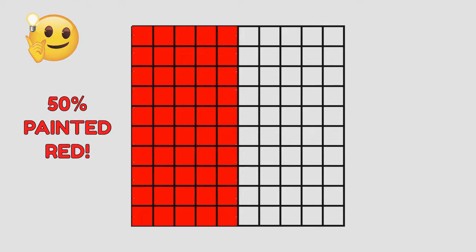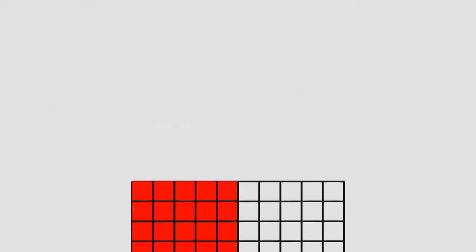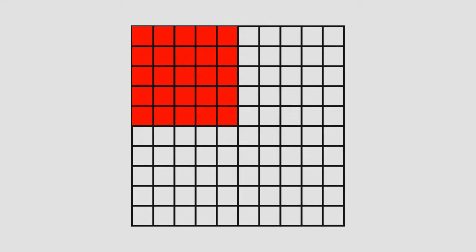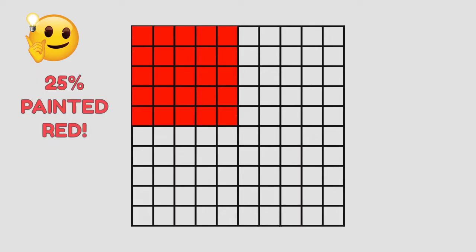Let's try another example. Suppose now we paint only 25 little squares. What percentage of little squares have been painted? You are right again — the answer is 25%. We have painted 25% of all the squares.